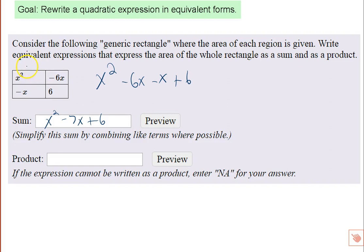So if I could figure out the outer dimensions of this rectangle, I would have length times width, and I would have the area written as a product. So the outer dimensions, I know x squared must be x times x.